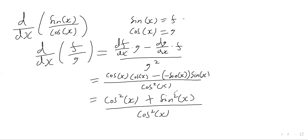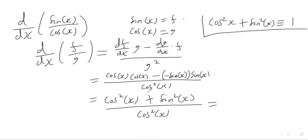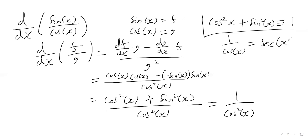Looking at the numerator, we can use a trig identity: cos squared plus sine squared is always equal to one — that's a key standard trig identity. So the numerator, regardless of what x is, will always be one. What we've got then is one divided by cos squared. And one divided by cos is just sec of x, by definition, so we have sec squared of x.